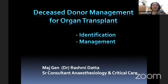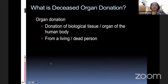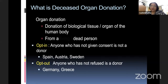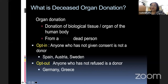I'll be taking you through the deceased donor management for organ transplant. Organ donation is the donation of a biological tissue or organ of the human body. There are two options: opt-in and opt-out. In opt-in, anybody who has not given consent for organ donation is not a donor. In opt-out, anybody who has not refused is a donor. We are an opt-in type of country, and as has been mentioned, it is very difficult in the northern part of the country to convince people.